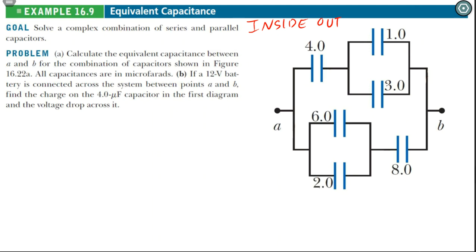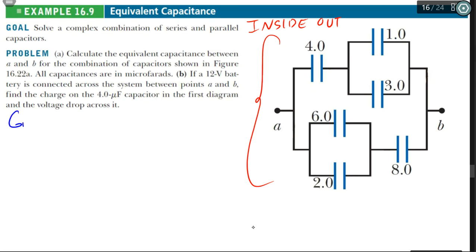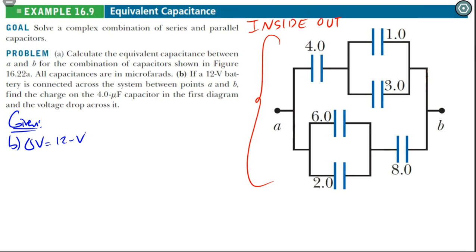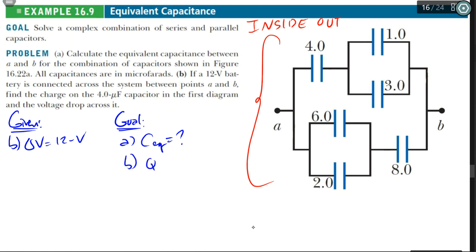So let's take note of what we're given here. We're given the diagram itself. But also for part B, we're given a battery which adds a potential difference of 12 volts. And we're trying to find what is the charge. So first, actually find the equivalent capacitance of the entire circuit and the charge on the 4 microfarad capacitor. And that's pretty much it, because that will actually take up quite a bit of our time.